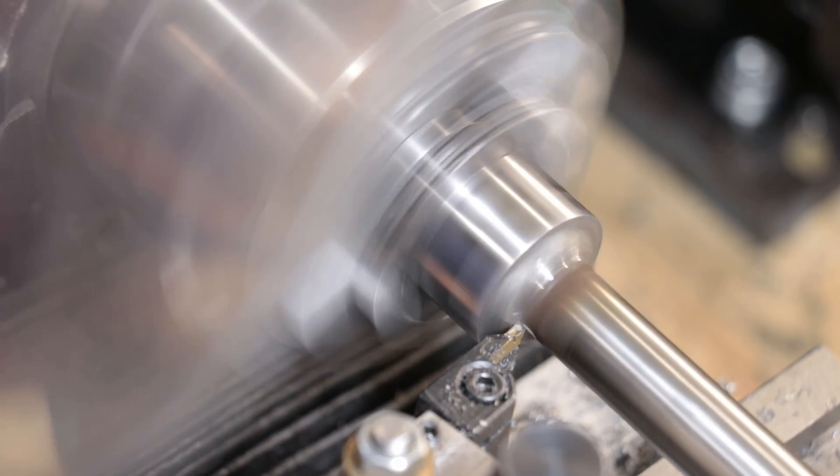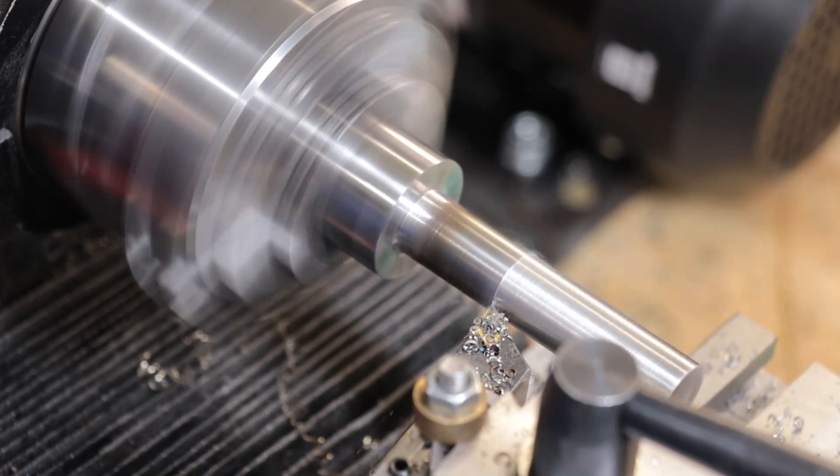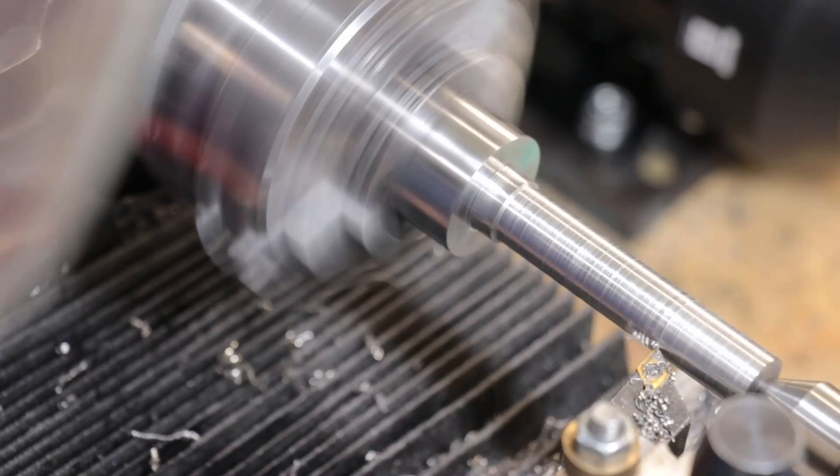I can then clean up the weld and then turn the shaft down to a diameter that I have a drill for, so I can actually drill a hole for the handle.